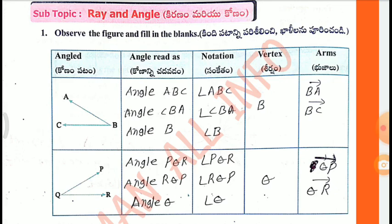Notation: Angle ABC or Angle CBA or Angle B. Vertex: B. Arms: BA and BC.